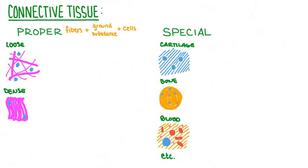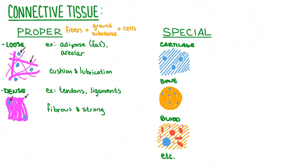Connective tissue is the most varied type of tissue and is often divided into two categories: proper connective tissue and special connective tissue. Proper connective tissue comes in two types — loose and dense — both consisting of cells and fibers surrounded in a ground substance. Loose connective tissue, such as adipose and areolar tissue, has fewer fibers and more lubricating ground substance, serving to cushion and lubricate surfaces between organs. Dense connective tissue, such as tendons and ligaments, has more fibers and less ground substance.